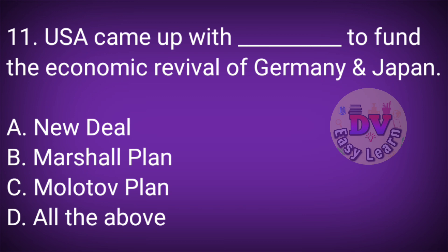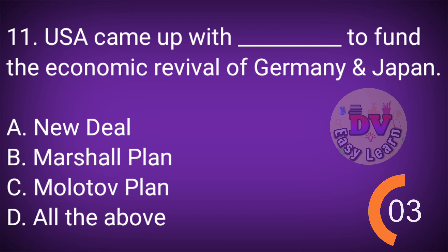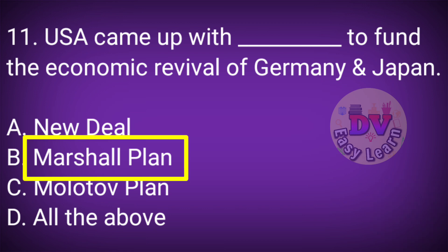Question No. 11: The USA came up with which plan to fund the economic revival of Germany and Japan? Correct answer: The Marshall Plan.